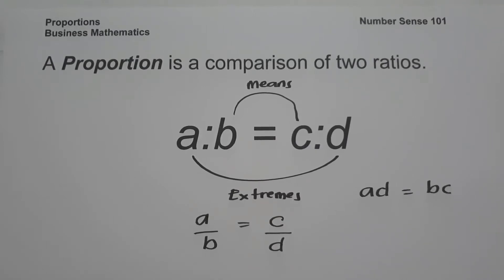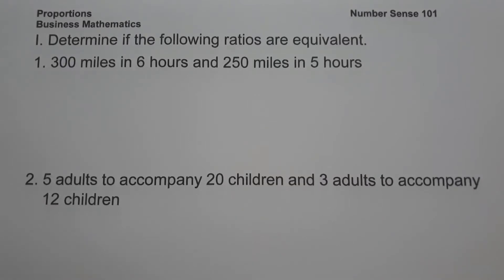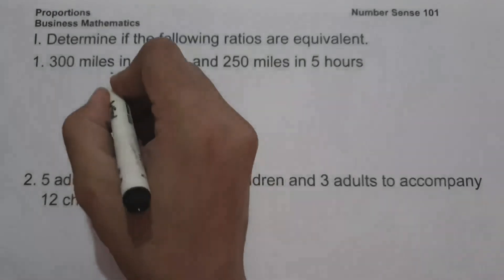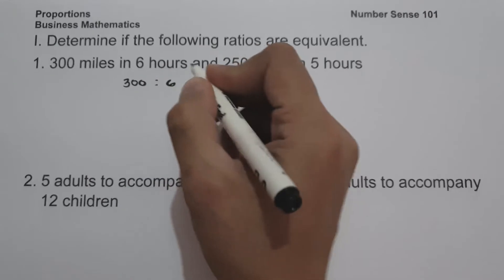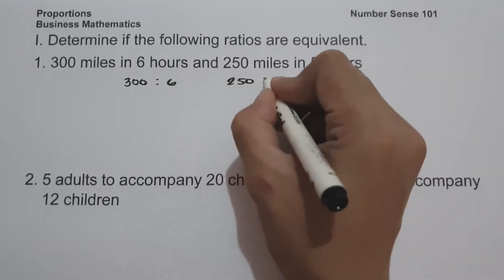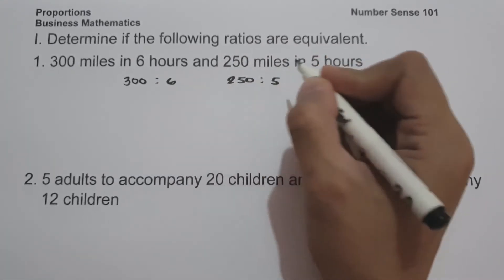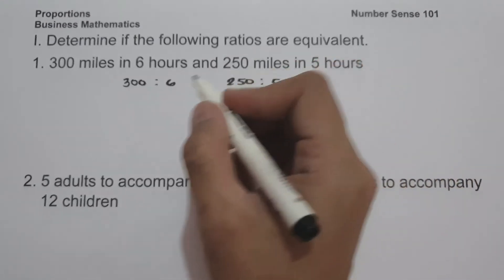Let's start with the first set of examples, where we are going to determine if the following ratios are equivalent. On number one: 300 miles in six hours and 250 miles in five hours. To determine if the ratios are equivalent, let us compare them — 300 miles is to 6 hours, and on the other side, 250 miles is to 5 hours.